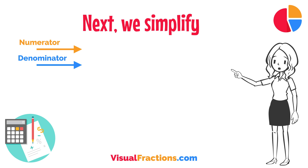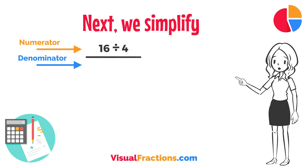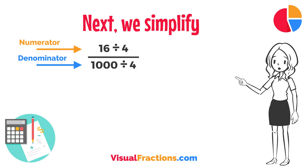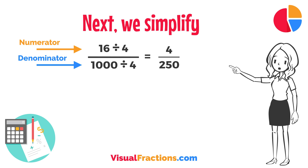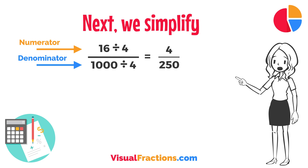Next, we simplify. Both the numerator and the denominator in 16/1,000 can be divided by 4, the greatest common divisor. Divide 16 by 4 to get 4, and divide 1,000 by 4 to get 250. So, 16/1,000 simplifies neatly to 4 over 250.